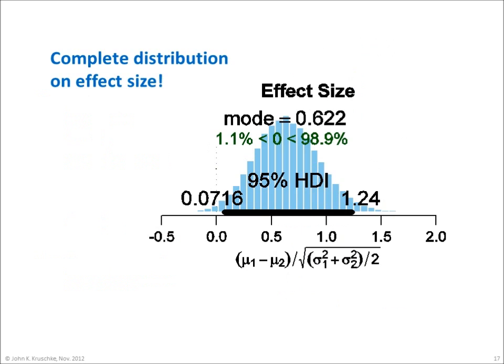Bayesian estimation also provides a complete distribution of effect size. Effect size is the difference of the means relative to the pooled standard deviation. We see here that the distribution of credible effect sizes is slightly skewed, with a modal value of 0.622, and it is credibly non-zero, insofar as the 95% HDI excludes zero.